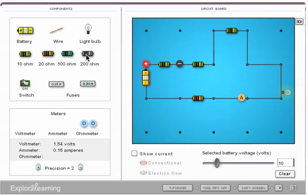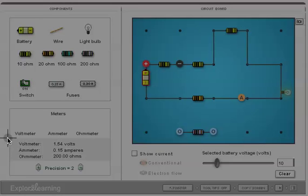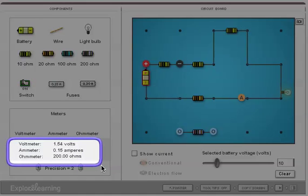Now the ohmmeter, to use that, I have to take a device and put it off to the side, out of the circuit, and put the ohmmeter across, in this case a resistor. And that'll show me the resistance of my resistor. And you can see that over here in the meter readings. There it is, 200 ohms.